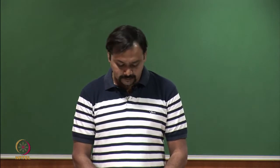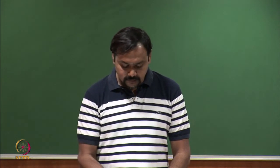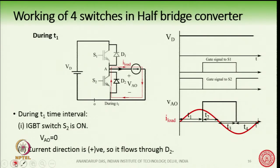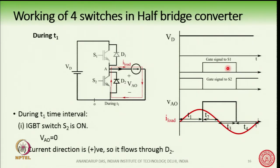In this half bridge converter, we see that switch S1 or D1, or switch S2 and D2 may be conducting. How do they conduct? It is shown in this slide. Here we have given the gate signal to S1 and the gate signal to S2. If S1 gate signal has been given, then the upper switch turns on and the voltage between point A and O will be like this.